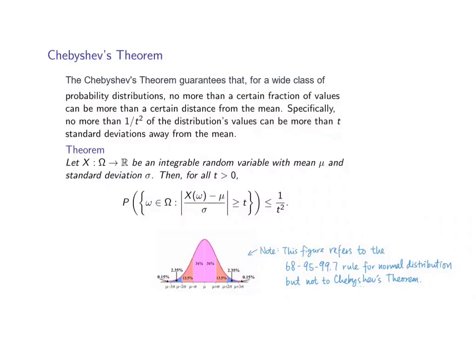The Chebyshev's theorem gives us an assurance that for a wide class of probability distributions, no more than a certain fraction of values can be more than a certain distance away from the mean. The Chebyshev's theorem states that: let x be a random variable which maps elements from omega to elements in R. It is an integrable random variable, and we are given that the mean has a value denoted as mu and the standard deviation has a value denoted as sigma. Then, for all positive values t, the event that contains all elements from omega such that the absolute value of x minus mu divided by sigma is greater than or equal to t has a probability less than or equal to 1 over t squared.